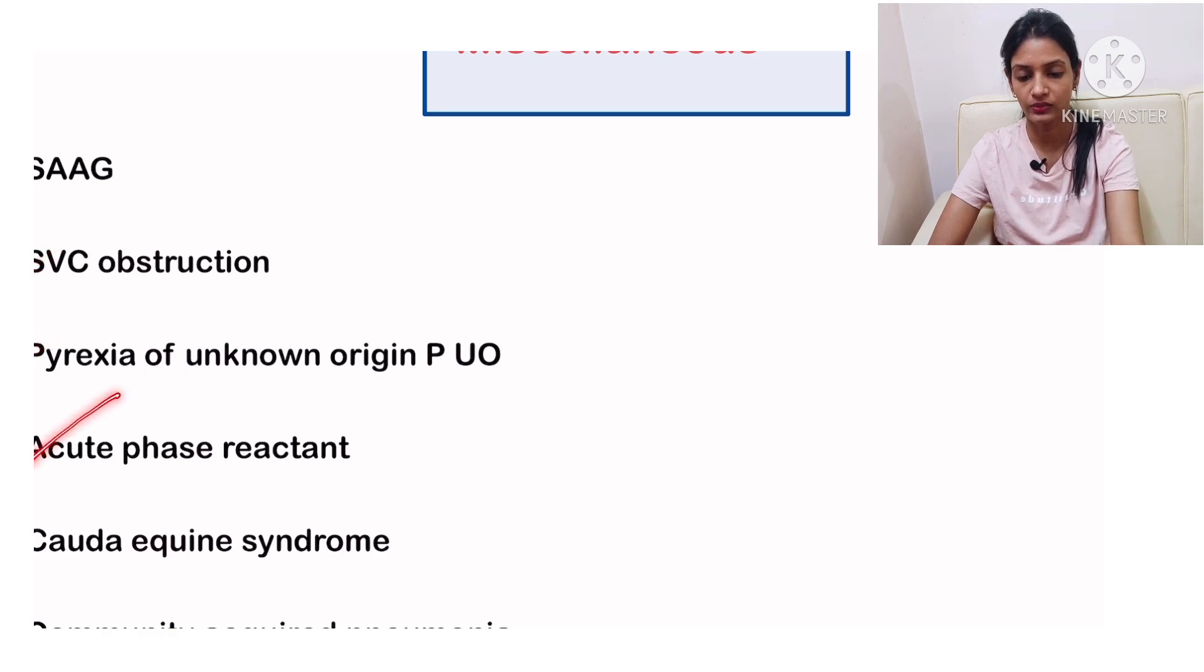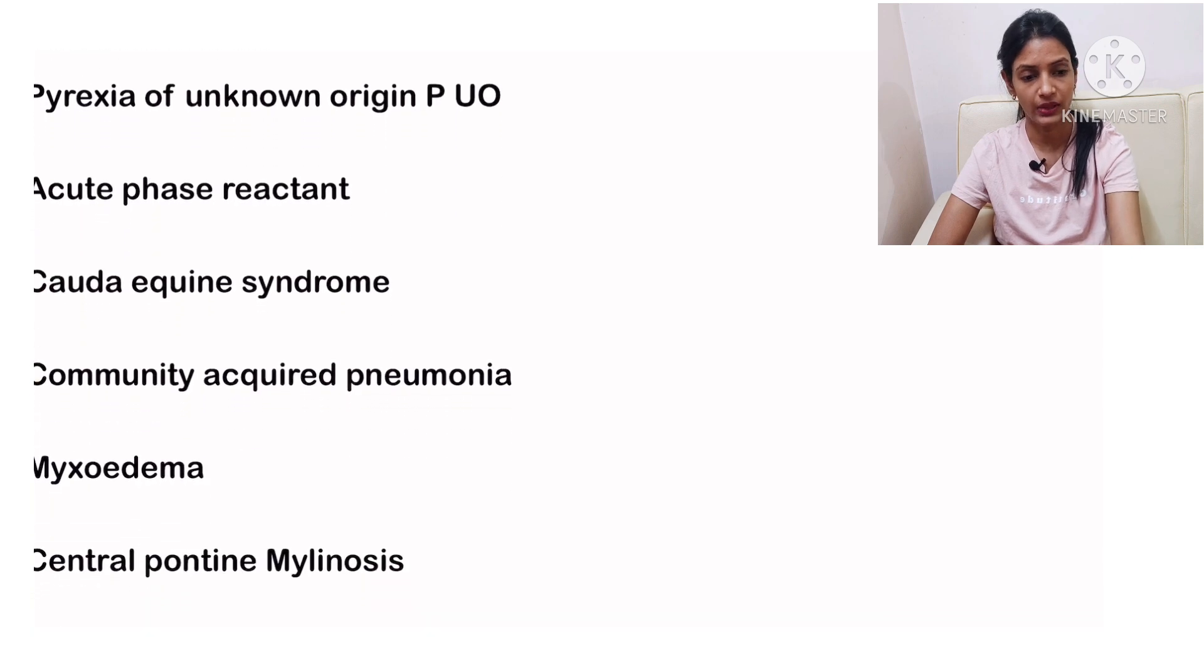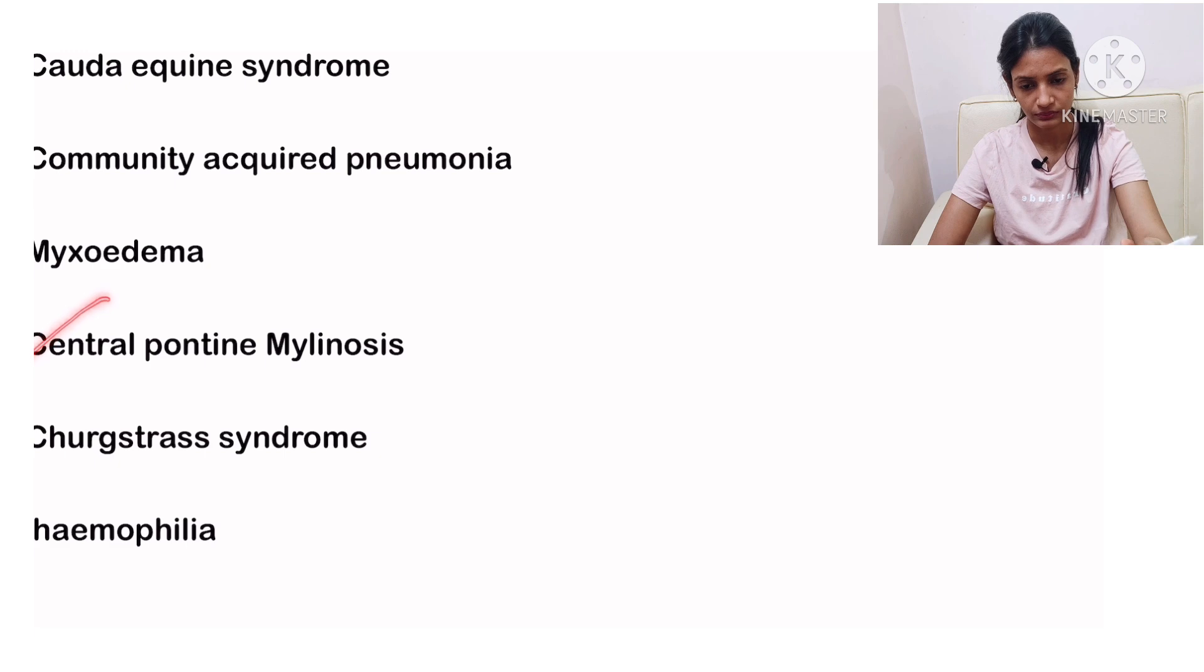In miscellaneous you must be knowing SARS, superior vena cava obstruction, pyrexia of unknown origin, acute phase reactant, Conn syndrome, community acquired pneumonia, myxedema, central pontine myelinolysis, Churg-Strauss syndrome, and hemophilia.